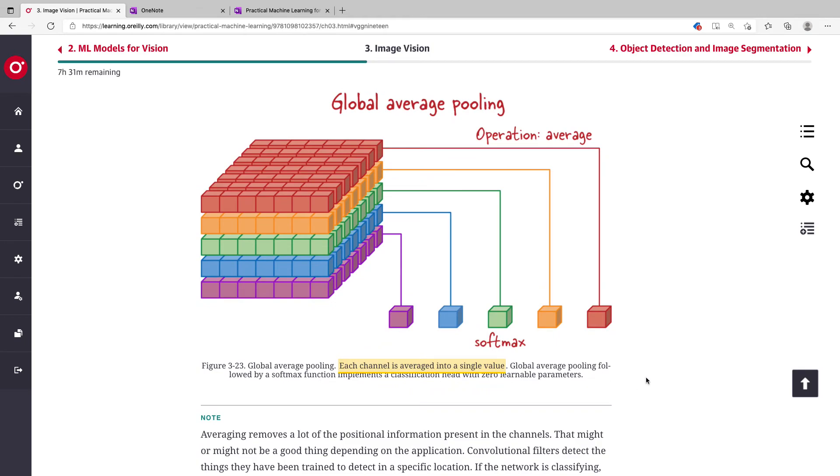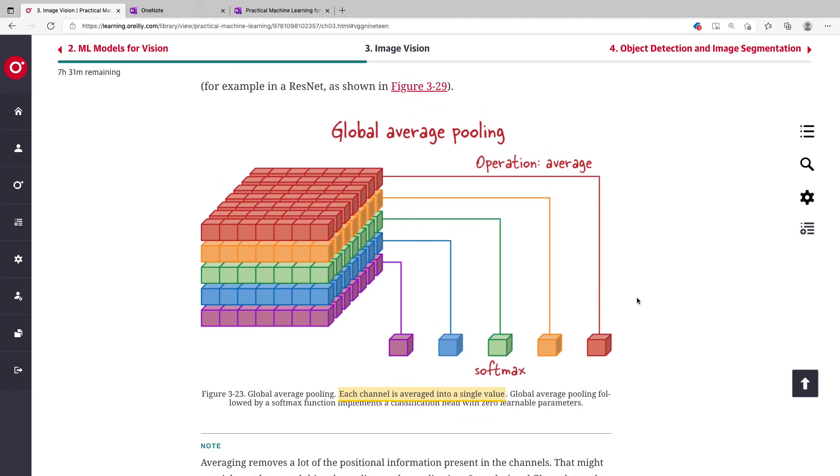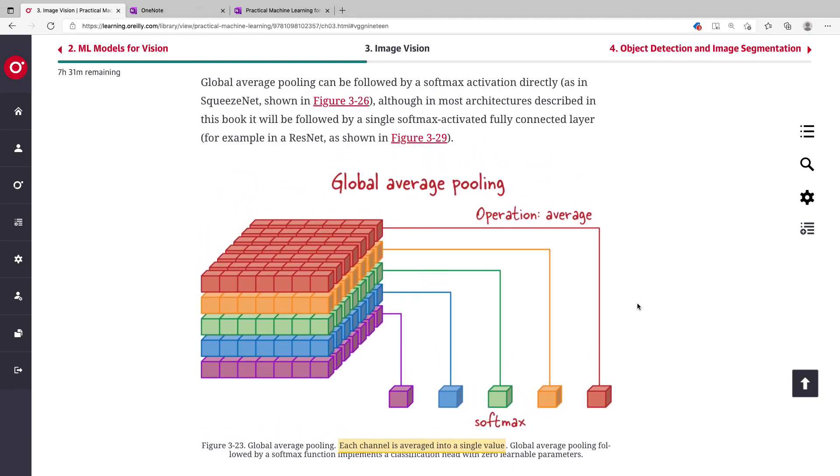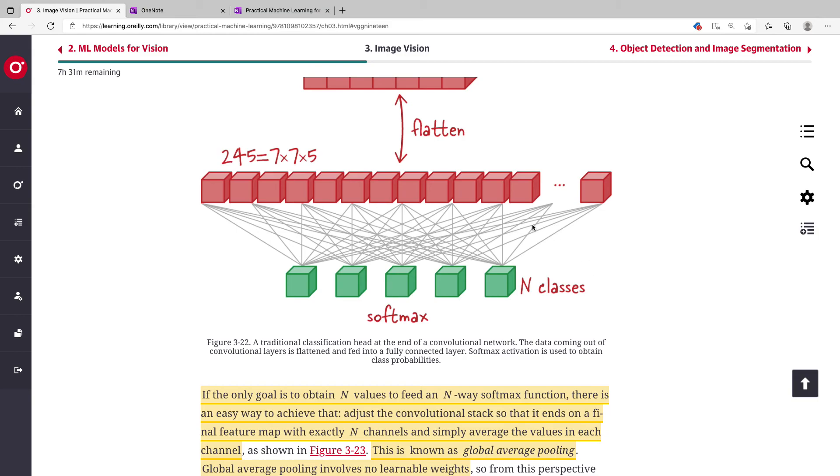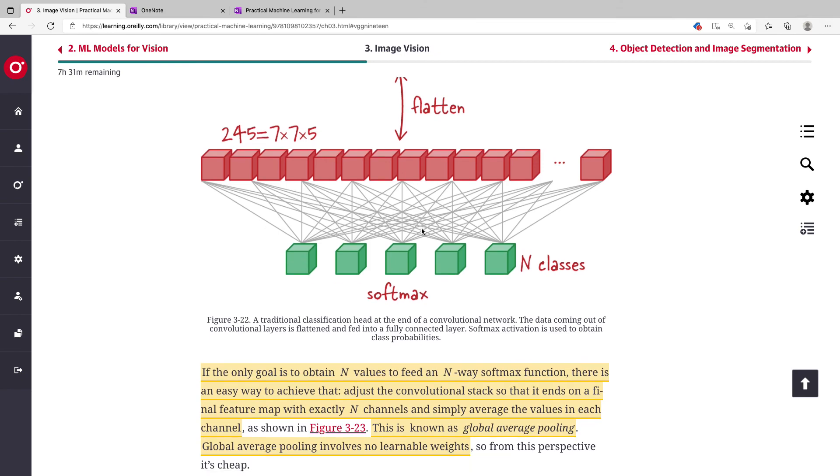Because global average pooling does not contain any learnable parameters, you eliminate the enormous weights you would have required to learn. This makes your entire architecture cheaper and have lower computation as well as lower storage demand.